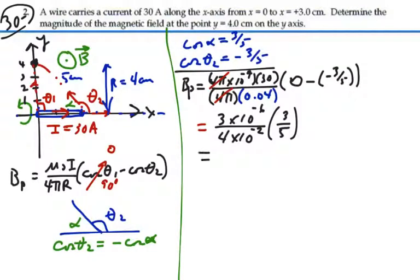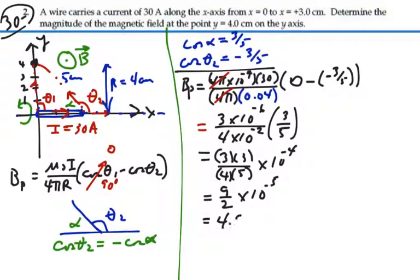So this is three times three, over four times five, times ten to the minus four, which is going to be nine divided by two times ten to the minus five, or four point five times ten to the minus five tesla, which I could write as forty-five microtesla.